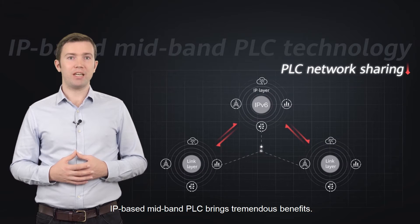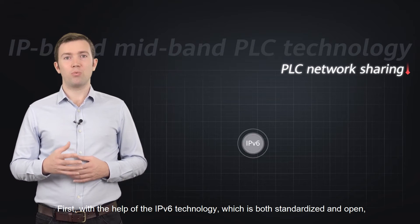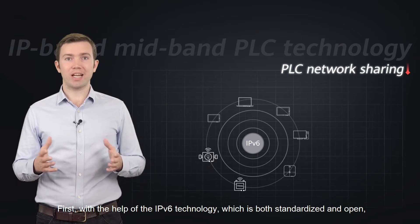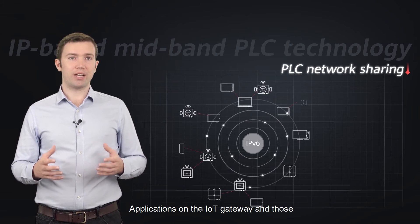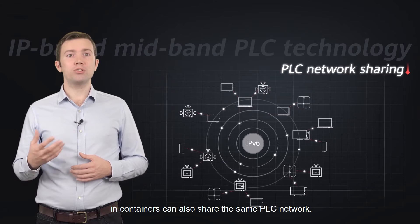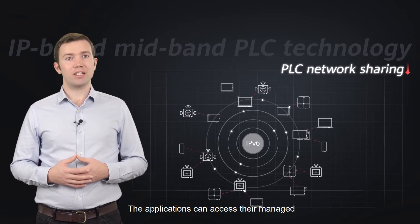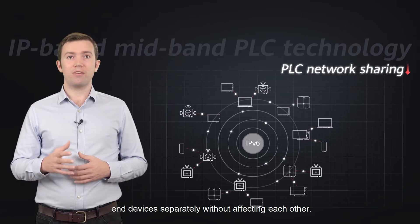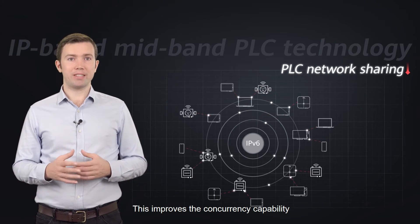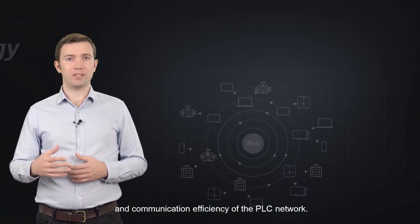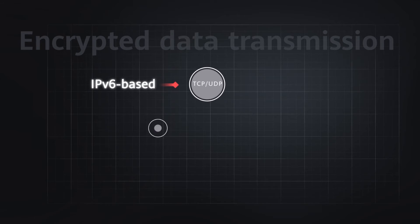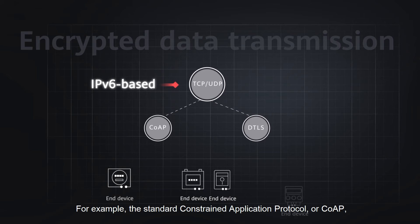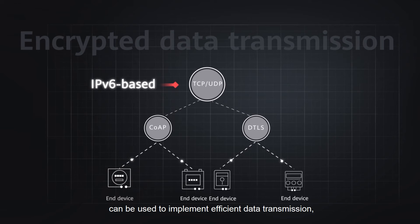IP-based midband PLC brings tremendous benefits. First, with the help of IPv6 technology, which is both standardized and open, different types of end devices can share one PLC network. Applications on the IoT gateway and those on containers can also share the same PLC network. The applications can access their managed end devices separately without affecting each other, improving the concurrency capability and communication efficiency of the PLC network. In addition, based on IPv6, diversified IoT protocols can run over TCP or UDP. For example, the Standard Constrained Application Protocol, or CoAP, can be used to implement efficient data transmission.